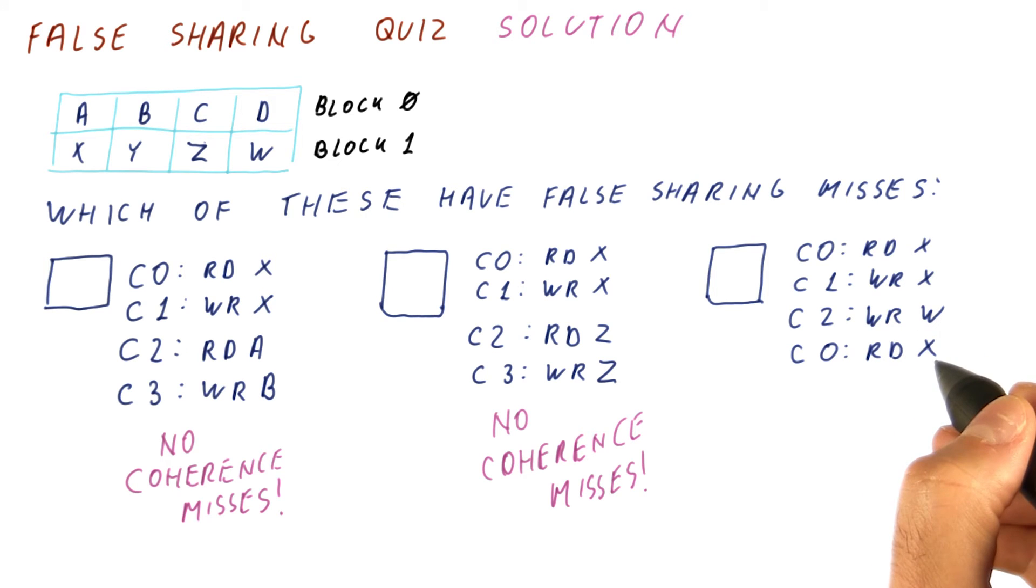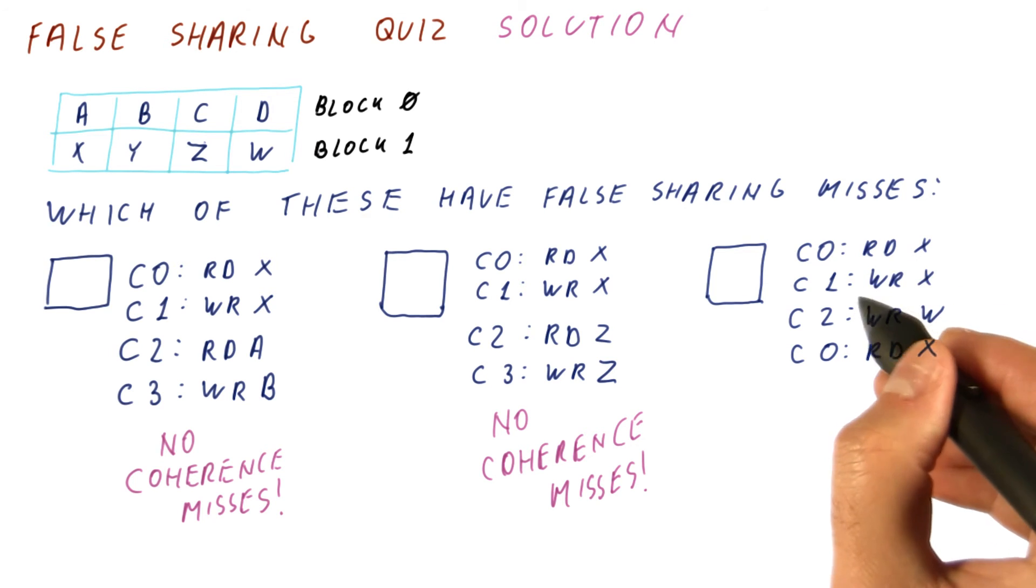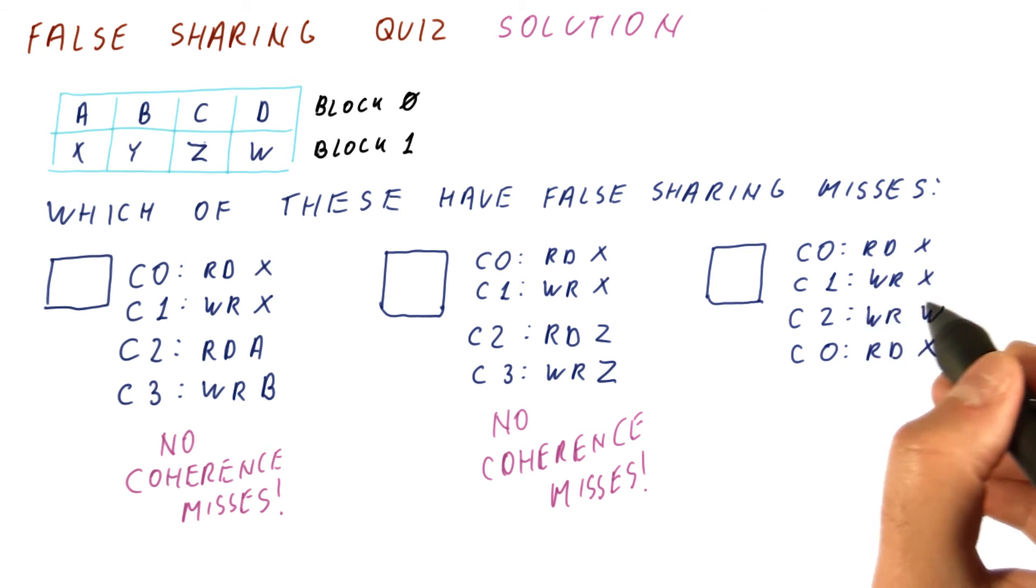Again, when C0 tries to read X, the reason it doesn't have the data in its cache is because C1 invalidated it. And C1 was accessing the same word. So this is an example of true sharing.